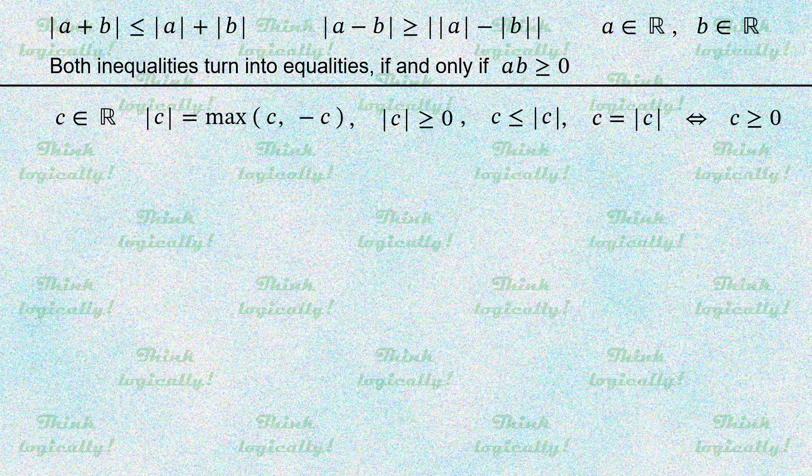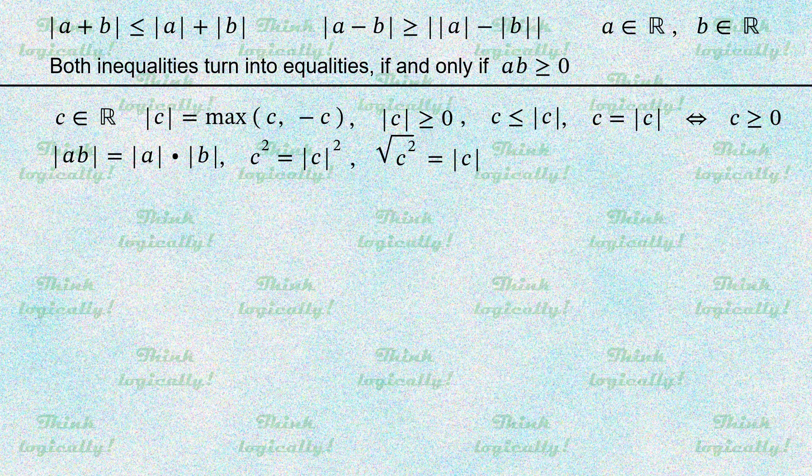It can be easily proven that the absolute value of a product is equal to the product of absolute values. In particular, the square of a real number equals the square of its modulus. Consequently, the arithmetic square root of the square of a number always exists and equals the modulus of this number.